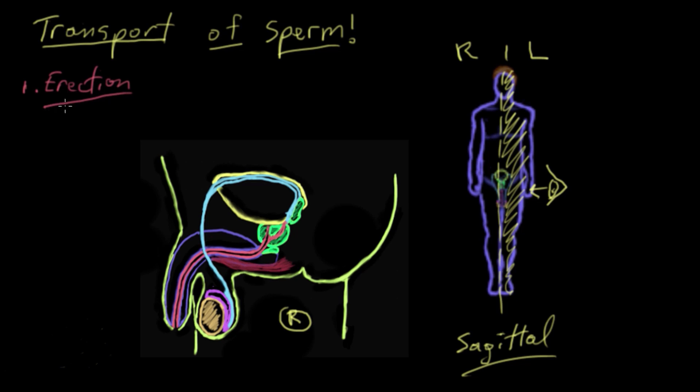Erection is basically when the penis goes from having very little blood within its core, a state called flaccidity, to a state where it's filled with blood. We call that an erection, when it's filled with blood.